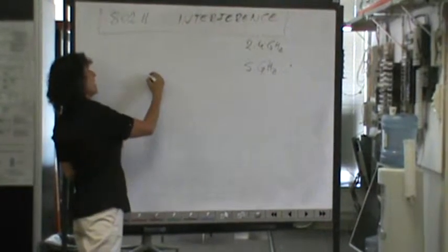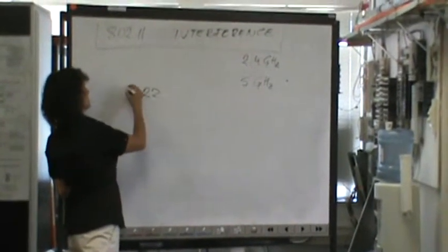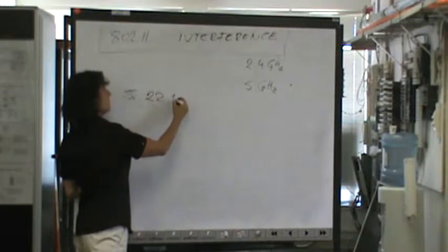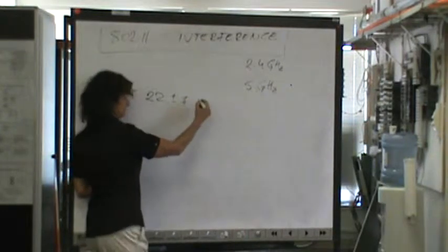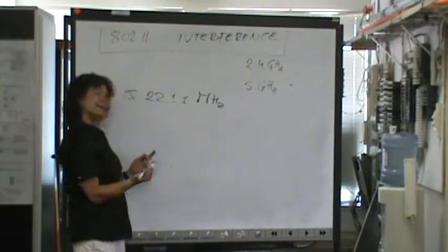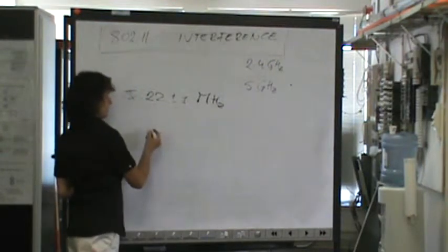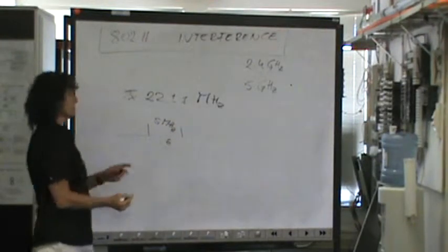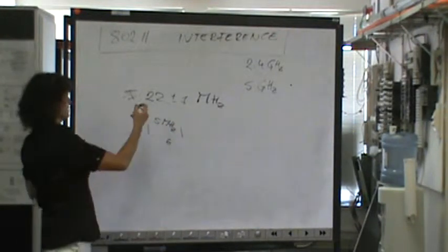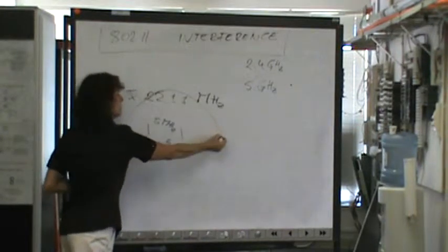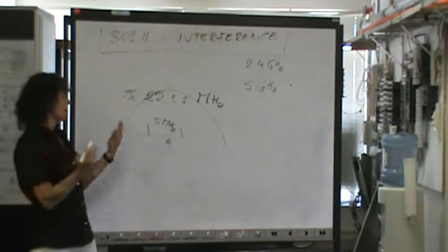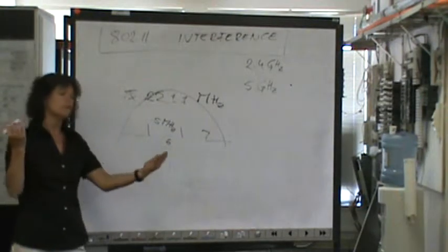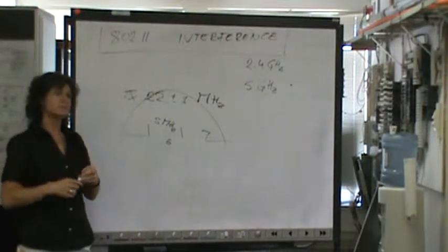And why is that such a bad interference? Because as you remember FCC requires transmissions to be 22 plus minus 1 megahertz. But our channel, for example this channel 6, is only 5 megahertz. So now when you imagine this transmission happened, this transmission will actually take more than one channel. And if there is another device on channel 7, it will simply interfere with that transmission.